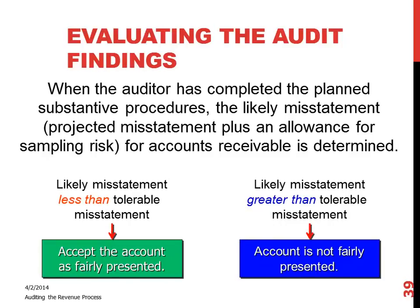We've laid out the six steps in gathering evidence about the sales and collection cycle. Now at this point, you've gone through the audit of that business process and you want to evaluate your audit findings. You've completed the planned substantive procedures, so you want to look at whether there are any potential misstatements, and then you have to project those misstatements, because you're trying to gather evidence about the risk of a material misstatement. We'll talk more about sampling risk when we cover sampling.